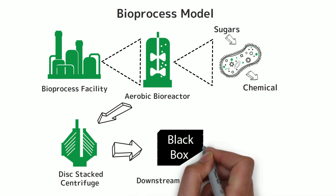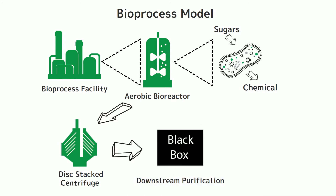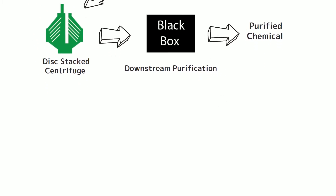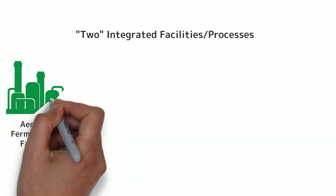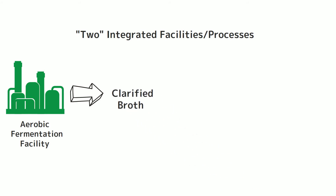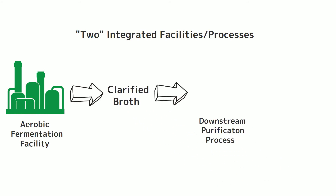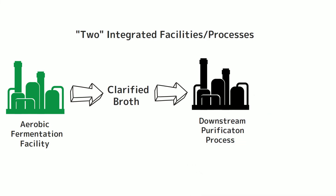or clarified broth, is sent to a downstream purification process. Currently, the downstream purification process, or DSP, is treated as a black box producing a purified chemical product from the clarified broth input. Effectively, the bioprocess facility can be thought of as being modeled as two facilities or processes: first, a more detailed model of a fermentation facility producing clarified broth, and second, a more crudely modeled black box purification facility.